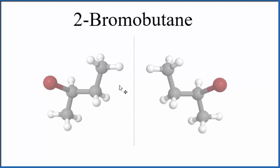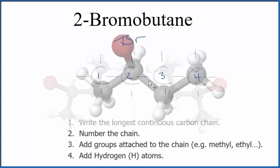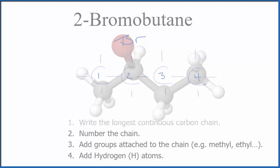So if you want to drill down and name this more specifically, you need to talk about R and S isomers of 2-bromobutane. But for our purposes, this is the structural formula for 2-bromobutane. This is Dr. V — thanks for watching.